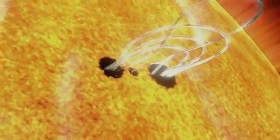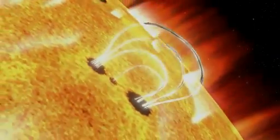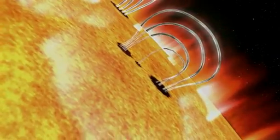Flares happen when the powerful magnetic fields in and around the Sun reconnect. They're usually associated with active regions, often seen as sunspots, where the magnetic fields are strongest.